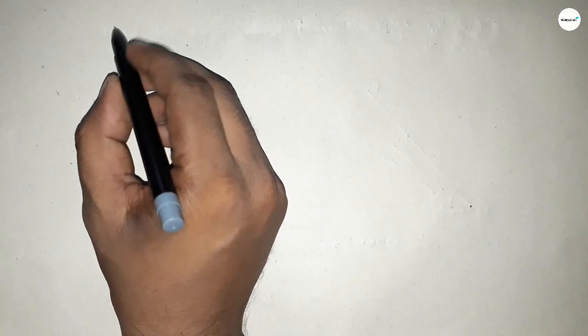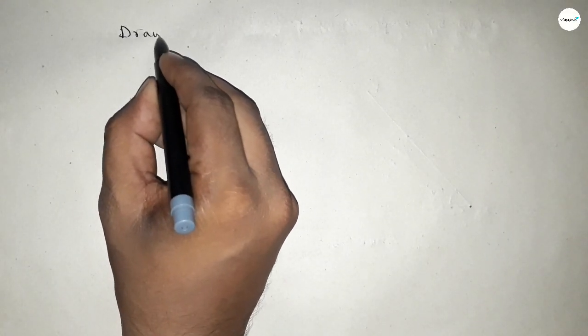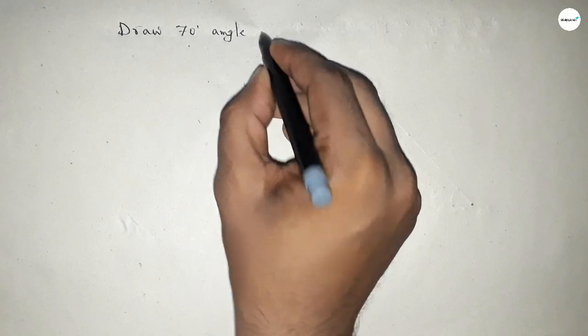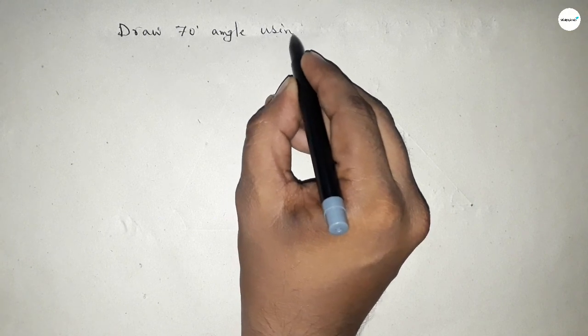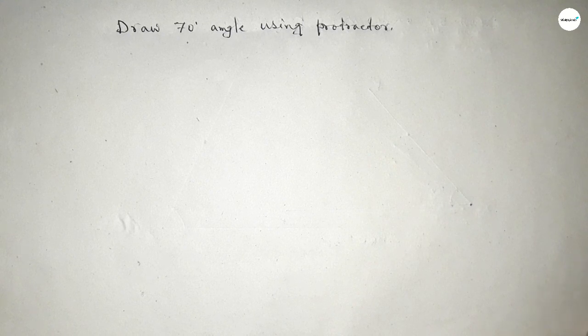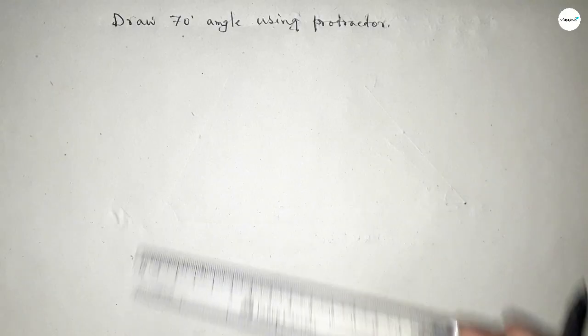Hi everyone, welcome to SSJR classes. Today in this video we have to draw an angle 70 degrees by using protractor. So constructing 70 degree angle by using protractor. Let's start the video.